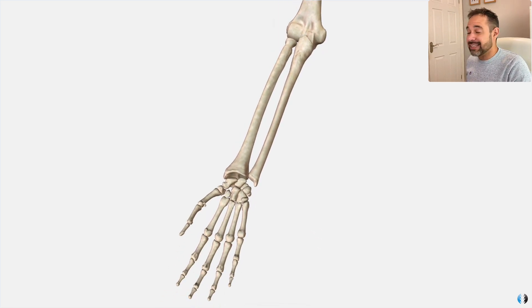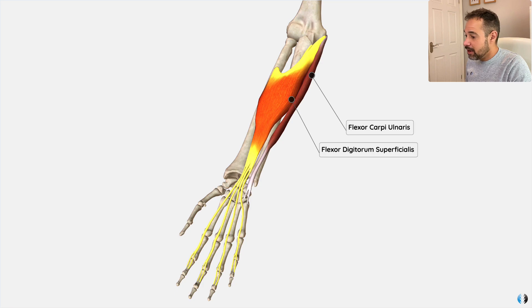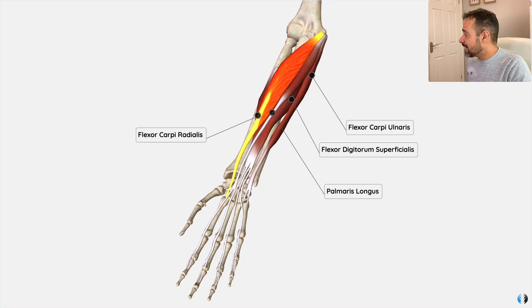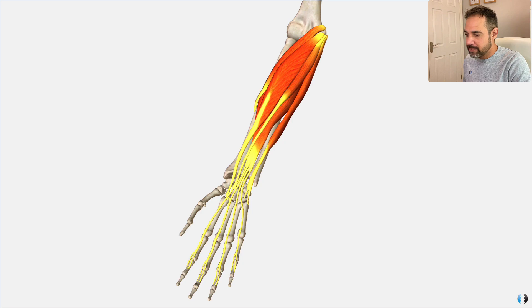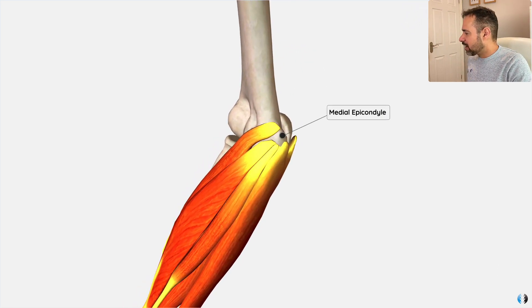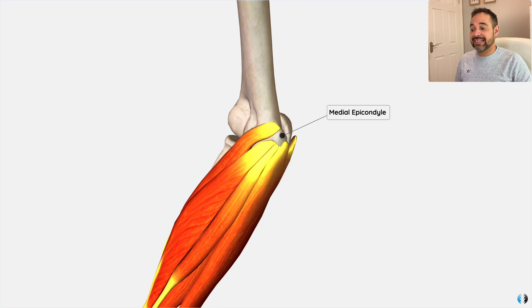Let's take a look at the key muscles that insert into that region. We have the flexor carpi ulnaris muscle, flexor digitorum superficialis, palmaris longus, and the flexor carpi radialis muscle, as well as a bonus muscle — the pronator teres, which is involved in pronation of the forearm. We can see how they all run across the anterior surface of the forearm before inserting into the medial epicondyle. On this model the tendons are shown individually, but in reality they all join together to create one single tendon, commonly referred to as the common flexor origin.